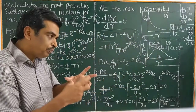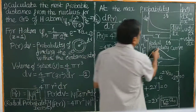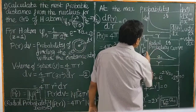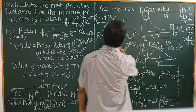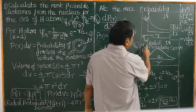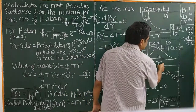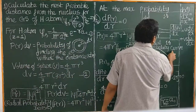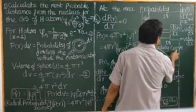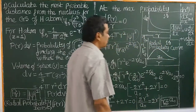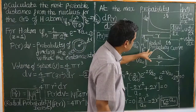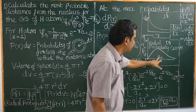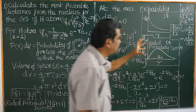The most probable distance is the maximum probability of finding the electron away from the nucleus. This is the probability plotted against the distance away from the nucleus. This is called the radial probability curve or radial distribution curve for the 1s orbital. From this curve, the maximum probability of finding the electron is at this particular distance.